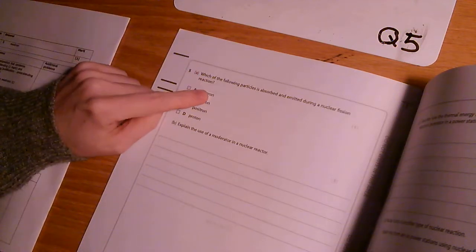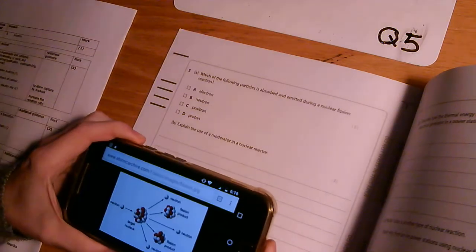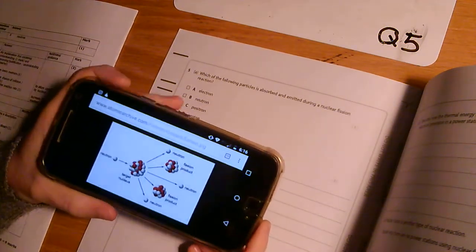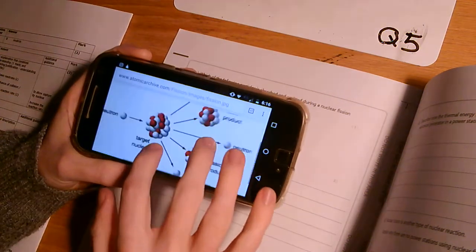Let's start off with this. Which of the particles is absorbed and emitted during a nuclear fission reaction? Let's get the terms right. There it is. There is your answer. Wonderful. It's a neutron.